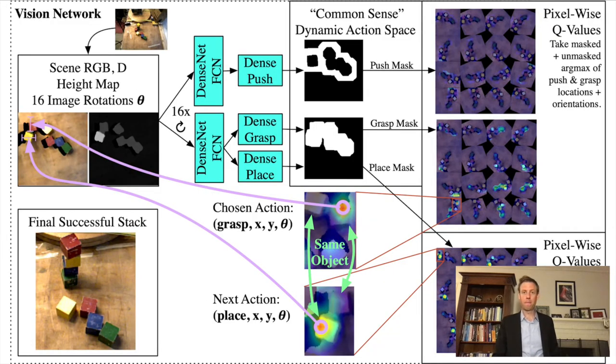Here's that slide with the pipeline again. We start with the image from the camera at the top left. We project it to an overhead view, and then we create 16 oriented versions of that image, which we pass through our pixel-wise fully convolutional neural network. That gives us predictions, which we filter with the common sense constraints we described earlier, which restrict the action space we can actually utilize. Now we are up to the rendering of the pixel-wise Q values on the far right, which are red pixels for high values and blue pixels for value near zero overlaid on the rotated images, which corresponds to the 16 possible gripper angles and the three possible actions. Once we have pixel-wise Q values, we take the masked and unmasked argmax of the push and grasp locations and orientations, and that gives us a chosen action like to grasp an XY location with a certain gripper angle. From there, you can follow this purple arrow to where we grasp the red block. Then the next action is to place on top of the yellow block. Finally, in the bottom left, you can see the final successful stack.